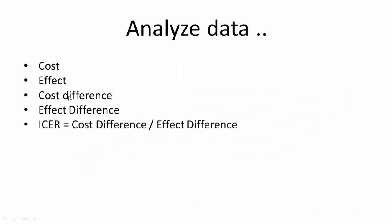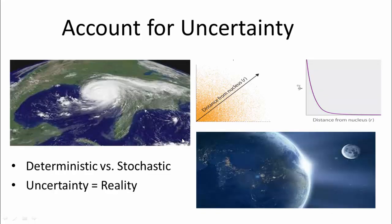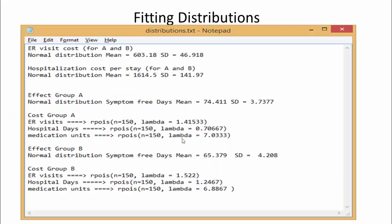Calculating the cost and effect variables, the cost difference and the effect difference, and then the incremental cost-effectiveness ratio by dividing the cost difference over the effect difference. However, we will have to account for uncertainty, and to do this we will have to fit the distributions of our variables.